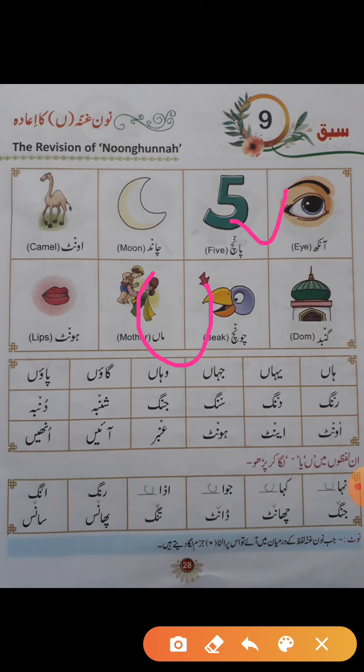آگے دیکھئے: ہاں، یہاں، جہاں، وہاں، گاؤں، پاؤں — ان میں نون غنہ آخر میں آیا ہے تو ہم نے یہاں نون غنہ بنایا ہے۔ جہاں بیچ میں آ رہا ہے وہاں ہم نون بنا کر اس پہ نون غنہ کا نشان بنائیں گے۔ رنگ، دنگ، سنگ، جنگ، شنبہ، دنبہ، اونٹ، اینٹ، ہوت، امبر، آئیں، انہیں — یہ سب نون غنہ کے الفاظ ہیں۔